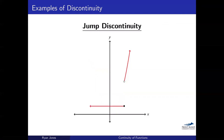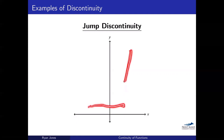Now let's look at a jump discontinuity. This is similar to the removable discontinuity except that even if I tried to fill it in with a piece of gum right there, that doesn't work because there's an entire gap. I would need a bridge to connect these two pieces. If I tried to trace this with my pencil, I'd end up here and have to lift it up to get to the other piece — that's the discontinuity.